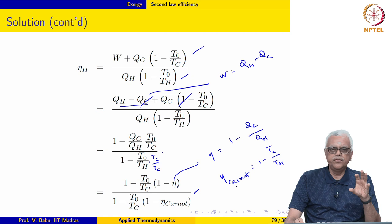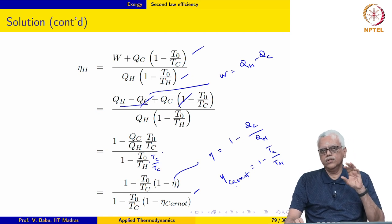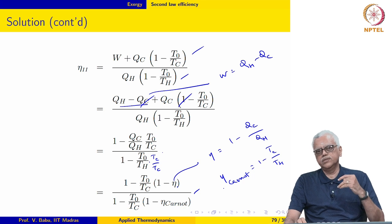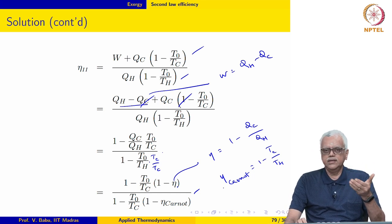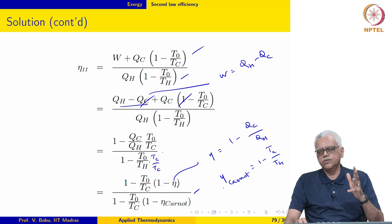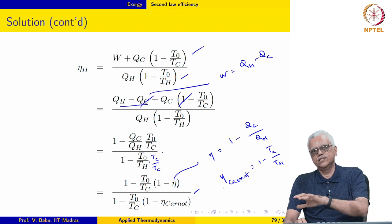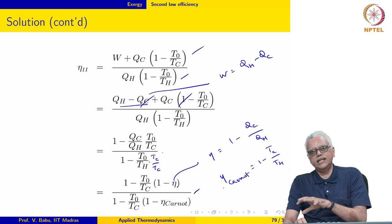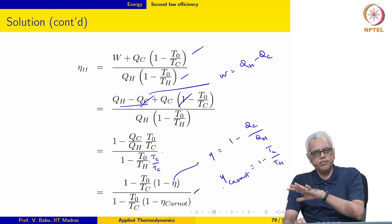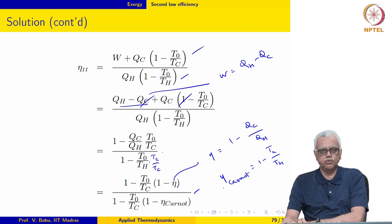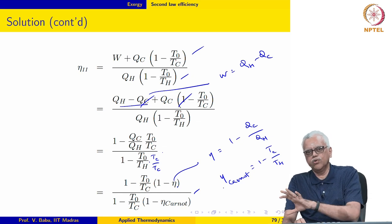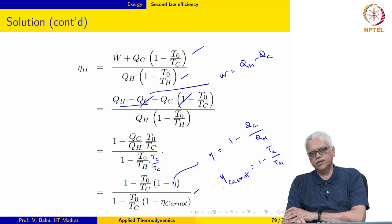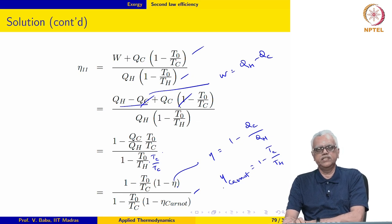The second law efficiency gives us more perspective on cycle performance and insights on individual component operations, since we can define second law efficiencies for components executing non-cyclic processes. When multiple designs exist for a process, this metric allows comparative evaluation because designs that appear identical on a first law basis can be discriminated using the second law efficiency. The notion of exergy and second law efficiency is therefore very important in practical thermodynamic applications.